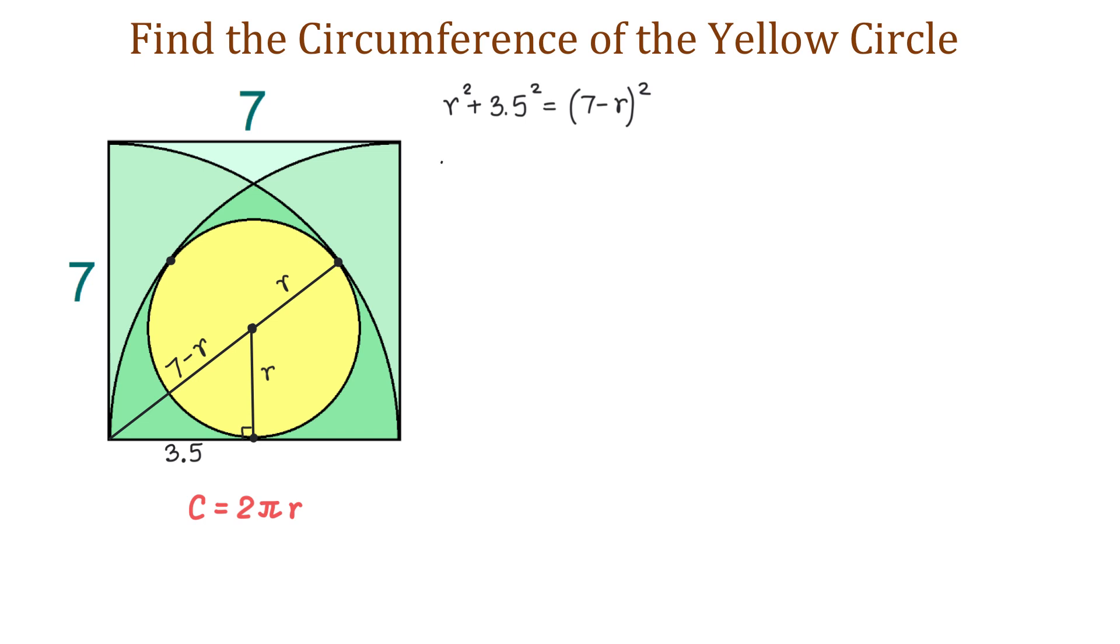On the left side, we have r² and 3.5² is 12.25. And now, to remove the parentheses on the right side, we will apply the formula for the square of a difference.